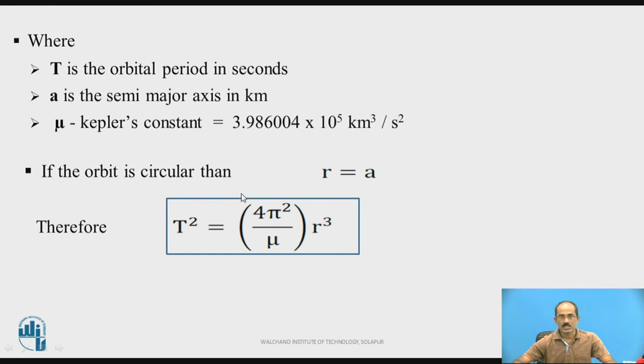If the orbit is circular, then the radius of this circle is equal to semi-major axis A. R = A, therefore T² now becomes equal to (4π²/μ) × R³. Wherever A is, it will be replaced by R. This is the total time period calculation formula.